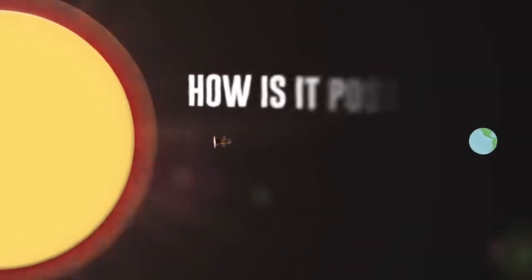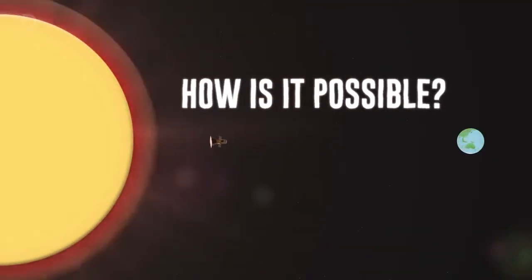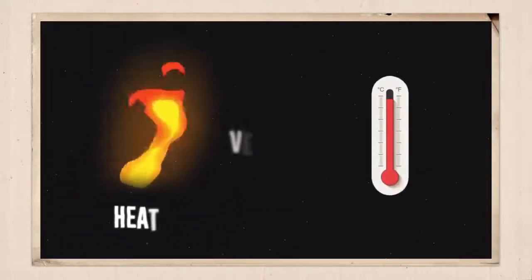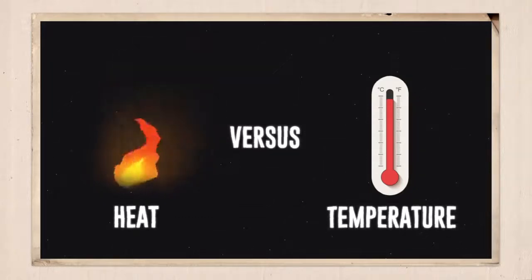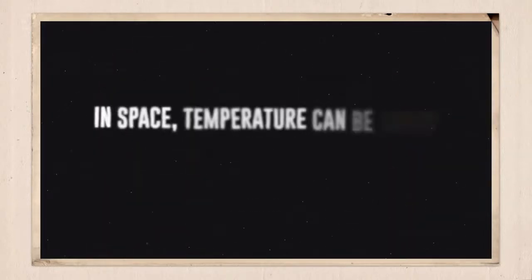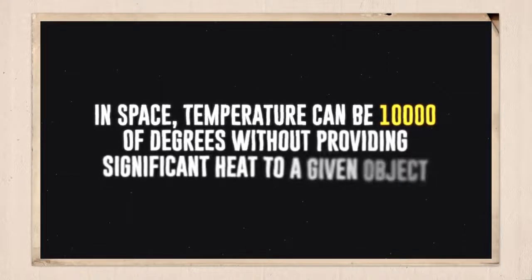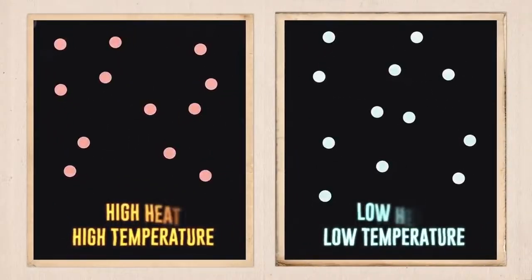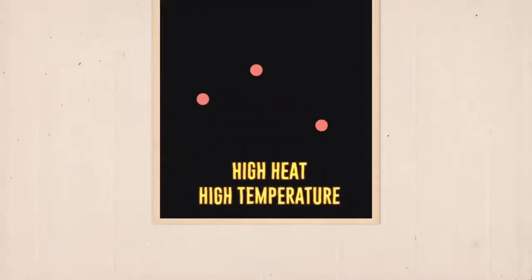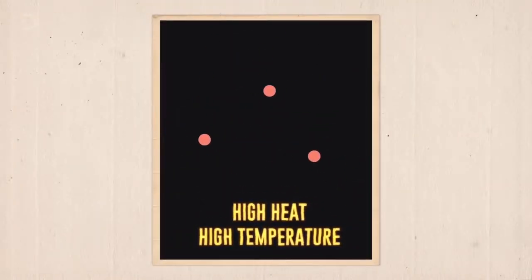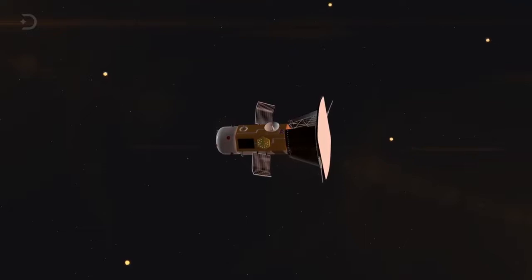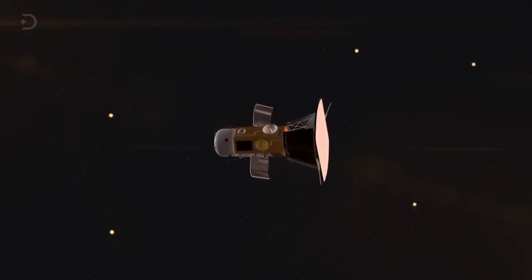You're probably wondering by now how something could survive such a close encounter with the Sun. After all, there are a lot of expensive and sensitive instruments aboard the probe. In order to grasp this, we need to understand the concept of heat versus temperature. We won't give a full lecture because that would take a few hours. But in space, temperature can be thousands of degrees without providing significant heat to a given object. Temperature measures how fast particles are moving, and heat measures the total amount of energy that they transfer. Particles in space might be moving fast with high temperature, but if there are very few of them, they won't transfer much heat energy. We know that space is mostly empty, and with that, there are few particles that can transfer energy to the probe.